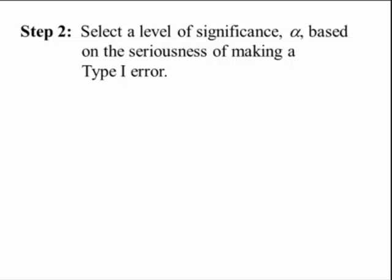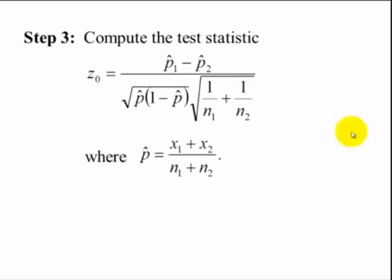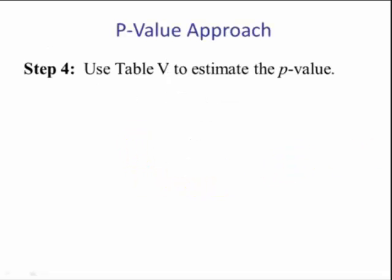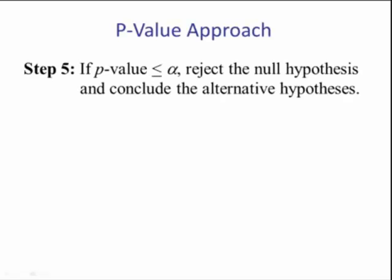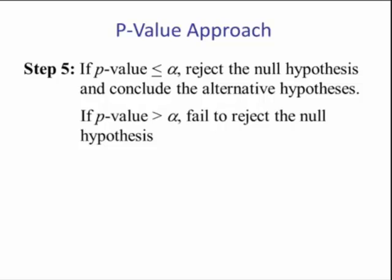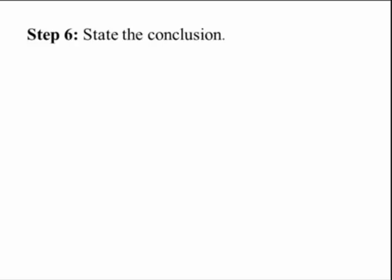Step number 2: Alpha, our level of significance, and that is the probability of making a type 1 error. Step 3, the test statistic is given by this formula, and our p-hat is this pooled estimate of p. Step 4, we can compute the p-value. Step 5, if the p-value is less than or equal to alpha, we will reject the null and conclude the alternative. Or, if the p-value is greater than alpha, we fail to reject the null. Step number 6, just as before, we state the conclusion in English.